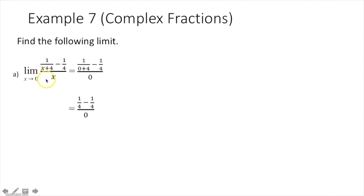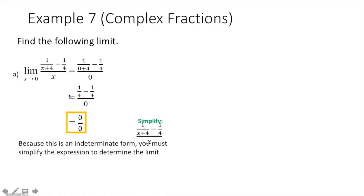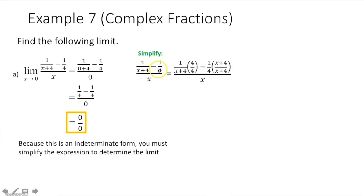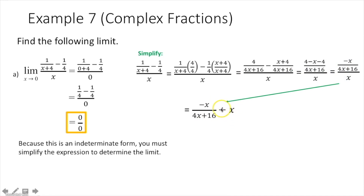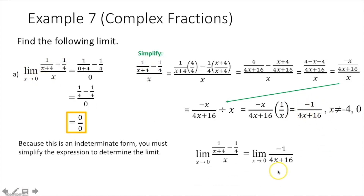Last example: plug in zero — get zero over zero, indeterminate form. Simplify the complex fraction by giving the terms a common denominator: multiply the first fraction by 4/4 and the second by (x+4)/(x+4). Combine the fractions, distributing the negative: 4 − (x + 4) = −x, giving −x over (4x + 16), all over x. Rewrite as a division: (−x)/(4x + 16) divided by x, then multiply by the reciprocal. The x's cancel, leaving the simplified function. Take the limit as x approaches 0, plug in zero, and get −1/16.